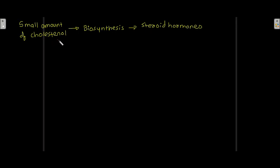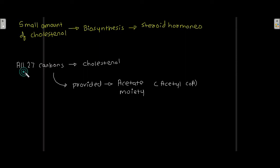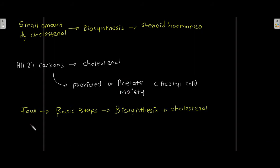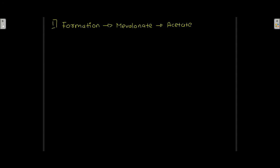All 27 carbons of cholesterol are provided by the acetate moiety, that is acetyl coenzyme A. There are four basic steps in the biosynthesis of cholesterol. The first step is the formation of mevalonate from acetate.